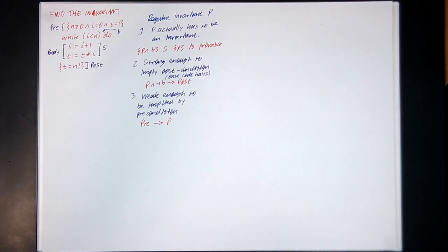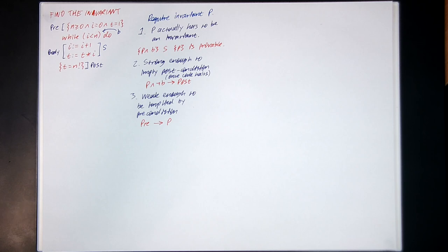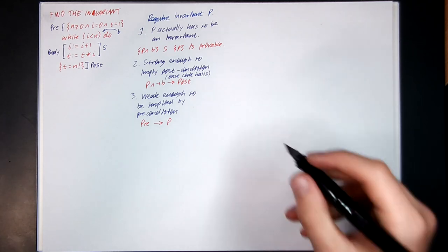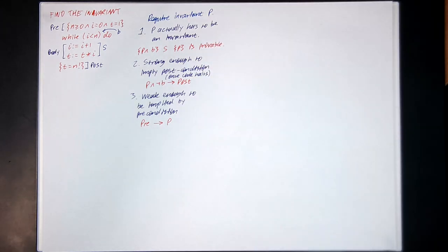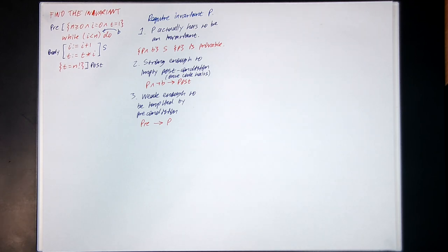So how do you find the invariant? Unfortunately, there is no hard and fast rule. You can't just crank the handle of an algorithm and receive an answer for P. You have to, by trial and error almost, find a P that satisfies these three properties. You can sort of intelligently guess by running the code for a few iterations and see if you can find a relation between the variables that makes this property true.